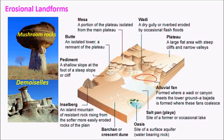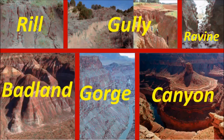Oases are other important features of deserts, though they are not erosional landforms. Barchans are depositional landforms. Other basic erosional landforms in arid areas include rills, gullies, ravines, badlands, gorges, and canyons.